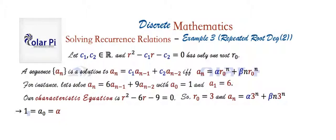And using the fact that a 1 is 6, we could write that 6 is equal to, well, that means n is 1 now. So this right-hand side will be alpha times 3 to the 1st plus beta times 1 times 3 to the 1st. And cleaned up, this will say that 6 is equal to 3 alpha plus 3 beta. And if we cut this equation in half, it will say that 2 is equal to alpha plus beta. Knowing alpha is 1, that means beta is 1.